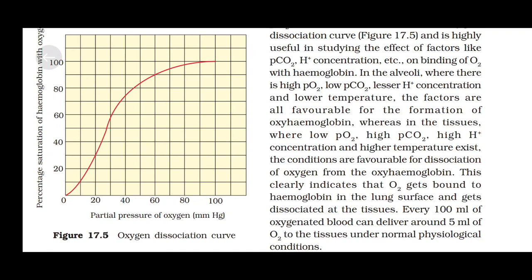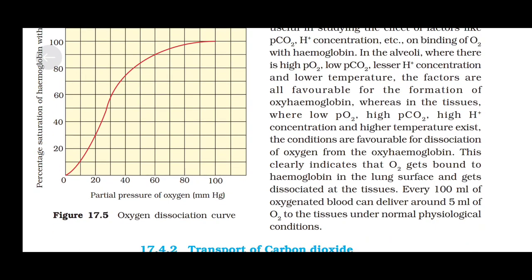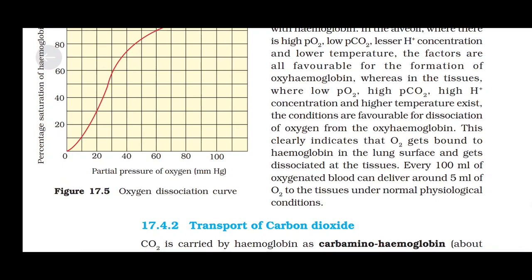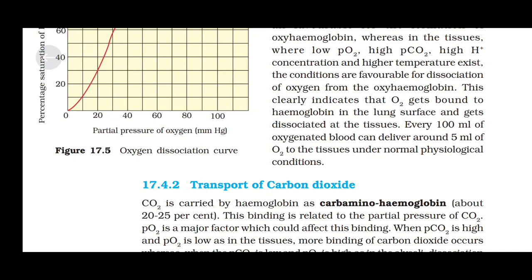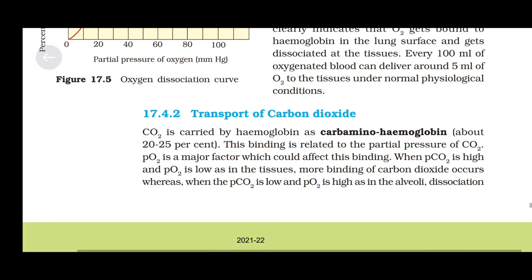Whereas in the tissues, where there is low pressure of O2, high pressure of CO2, high H+ concentration, and high temperature, the conditions are favorable for dissociation of oxygen from oxyhemoglobin. This clearly indicates that oxygen gets bound to hemoglobin at the lung surface and gets dissociated at the tissues. Every 100 ml of oxygenated blood can deliver around 5 ml of O2 to the tissues under normal physiological conditions.